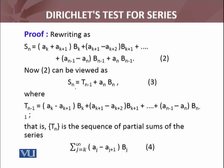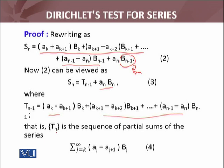Now I am going to say that the sequence of partial sums can be written as: all these terms I call Tₙ, plus aₙ·Bₙ, where Tₙ equals all these terms. That is, Tₙ is the sequence of partial sums, and Tₙ₋₁ which I have defined is in fact the sequence of partial sums of this series.